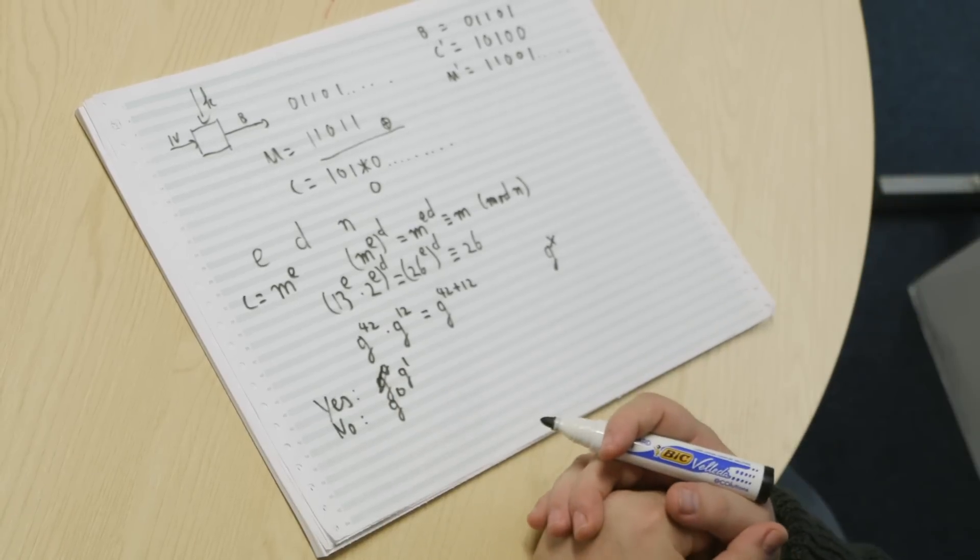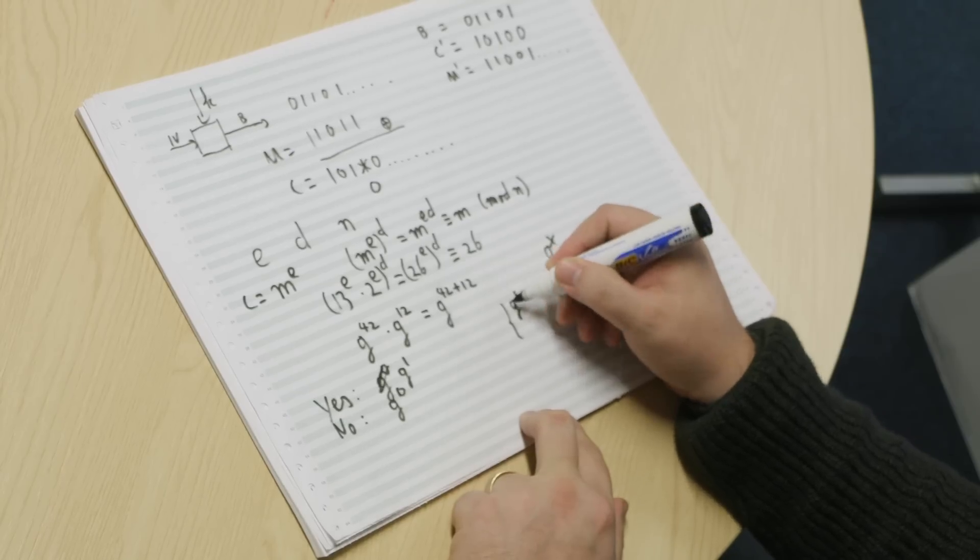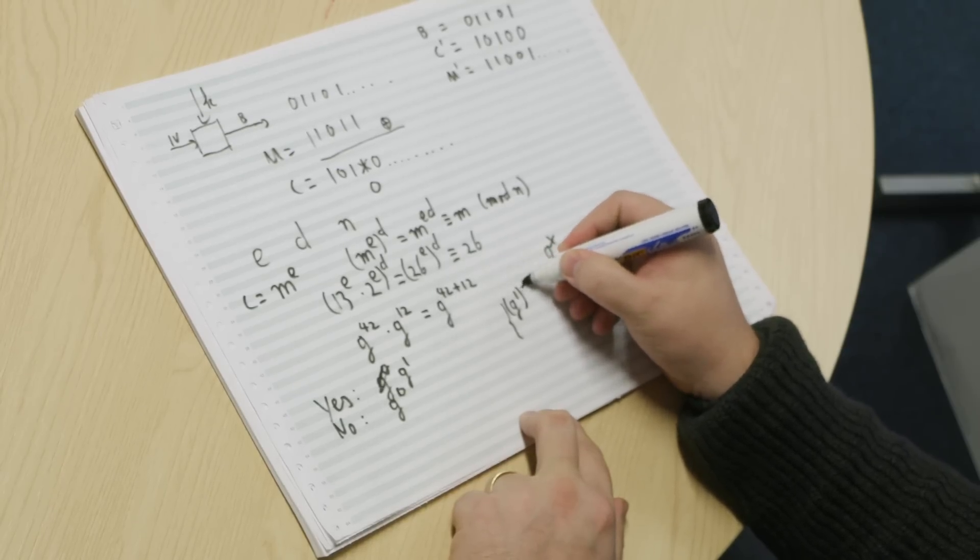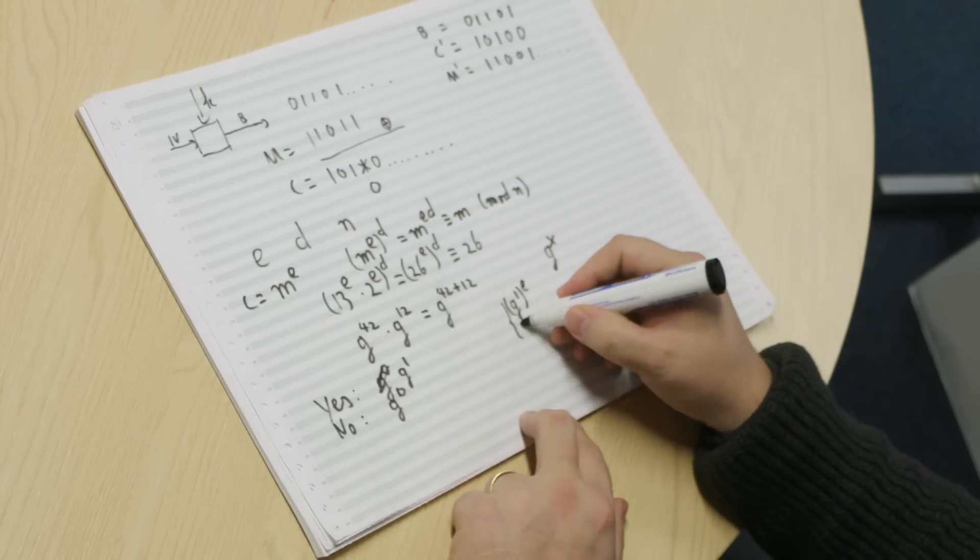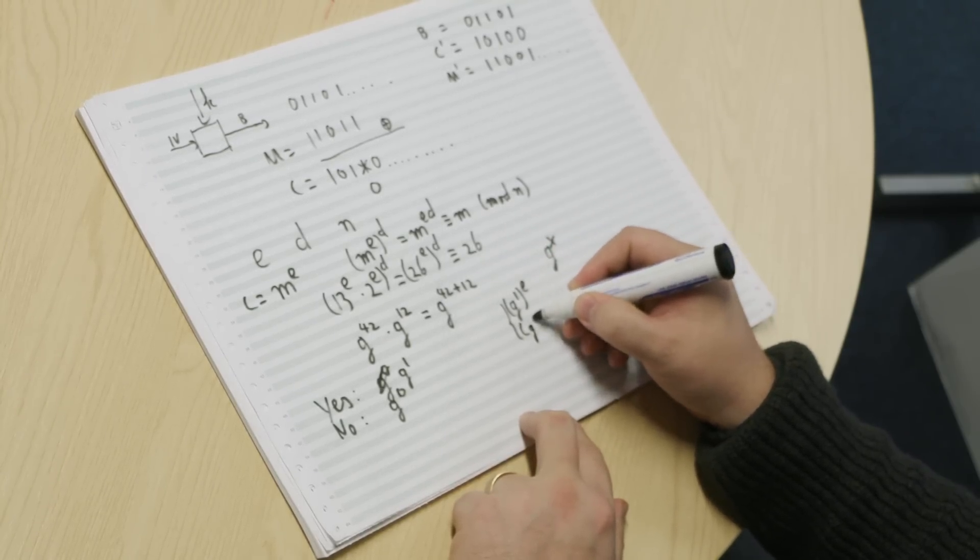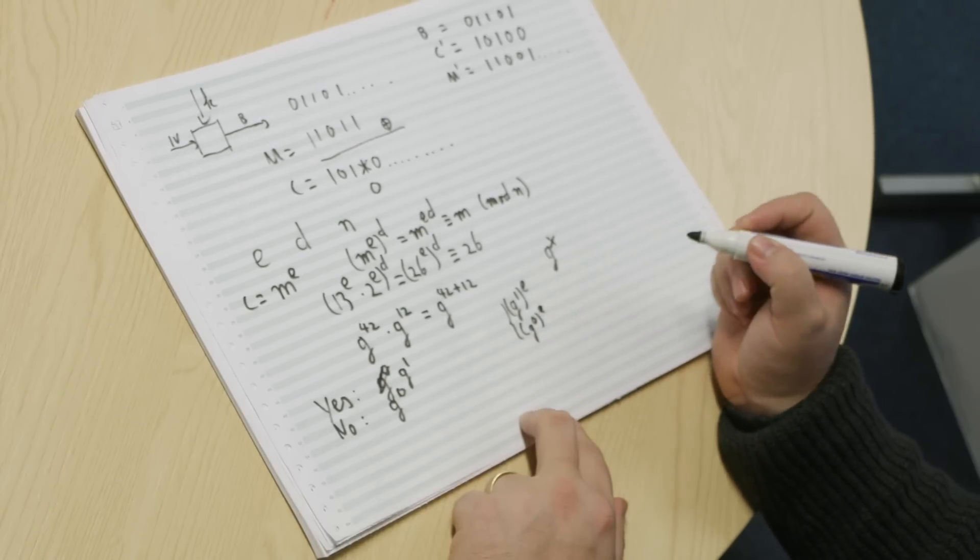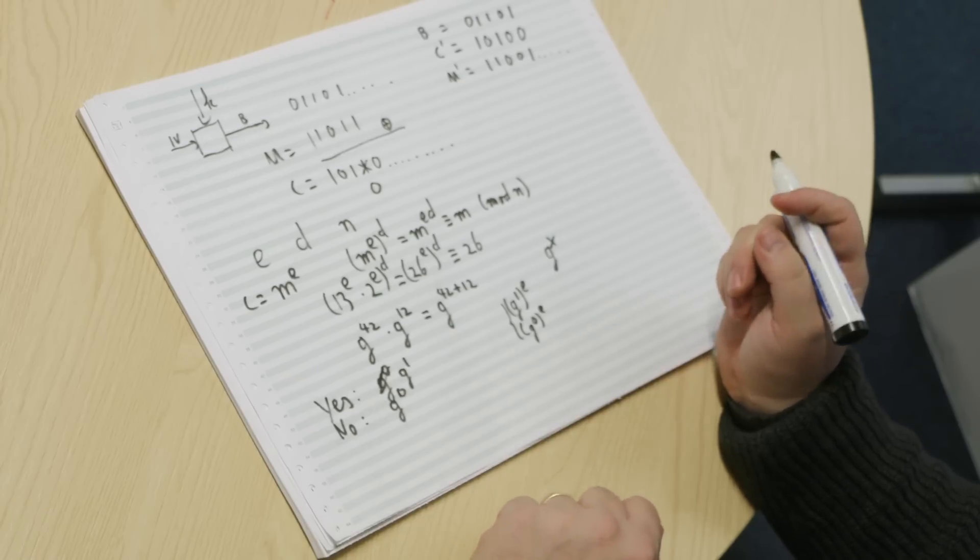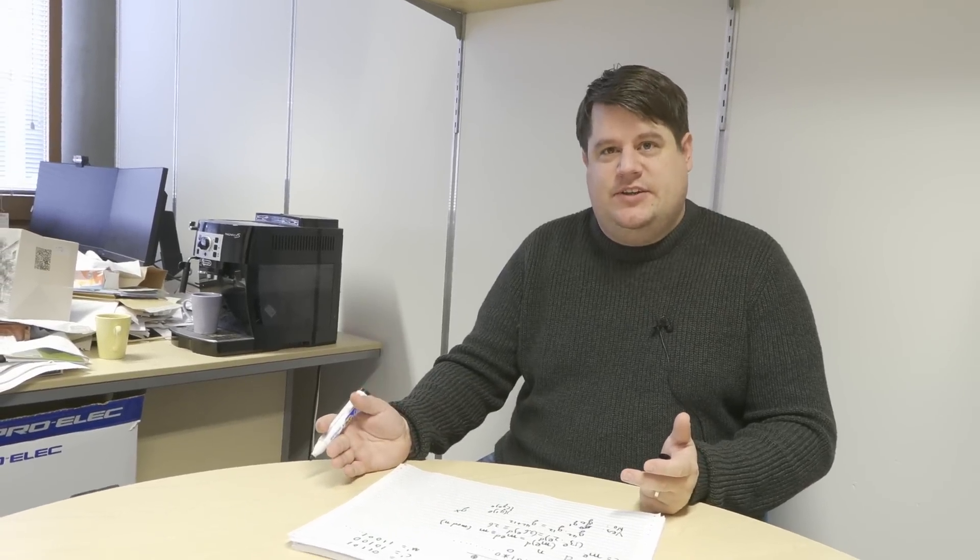So you've got 100 people voting. So all of them agree to encrypt their value. So they take either G to the power 1 to the power E, encrypted, or they take G to the power 0 to the power E.